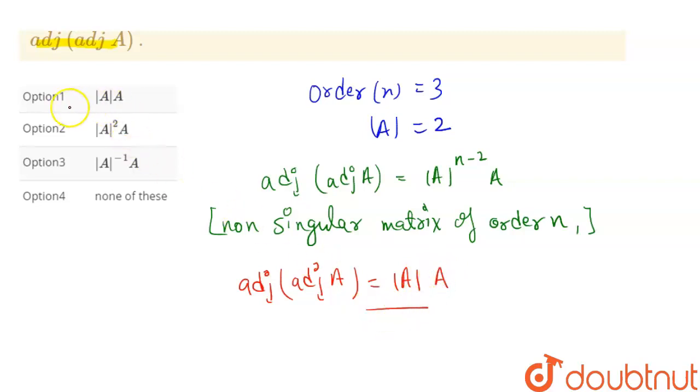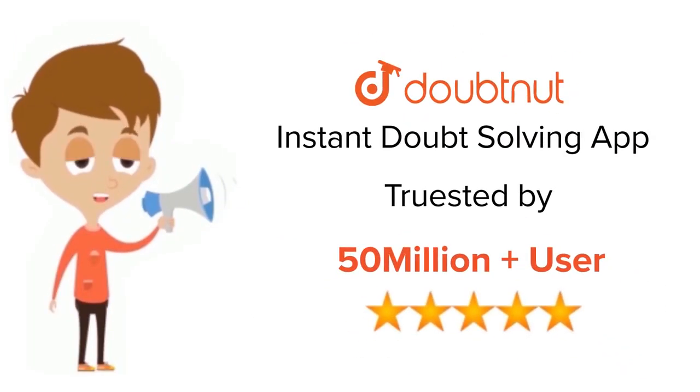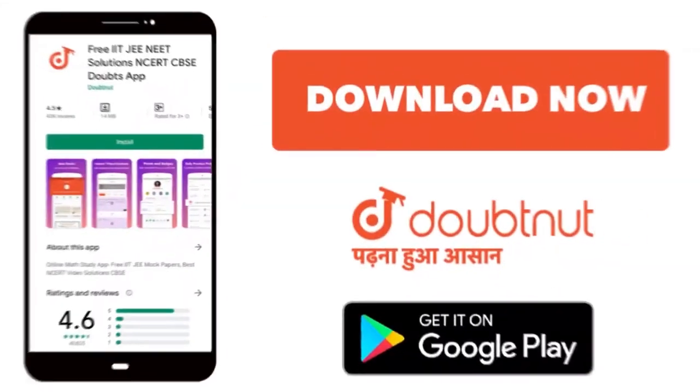From this we can see that option 1 is correct. For class 6 to 12, IIT-JEE and NEET level. Trusted by more than 5 crore students. Download Doubtnit app today.